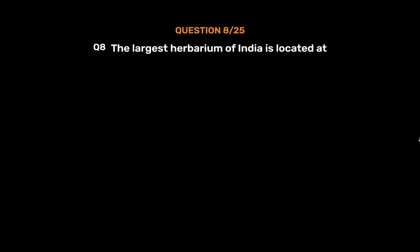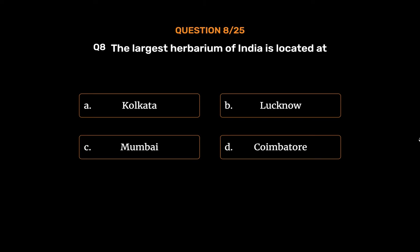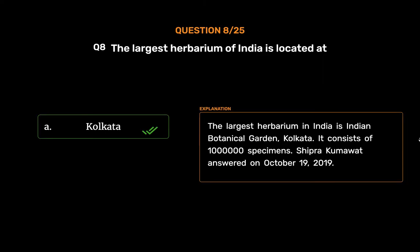Question No. 8. The largest herbarium of India is located at. Option A: Kolkata. Option B: Lucknow. Option C: Mumbai. Option D: Coimbatore. The correct answer is Option A: Kolkata. The largest herbarium in India is the Indian Botanical Garden, Kolkata. It consists of 10 lakh specimens.